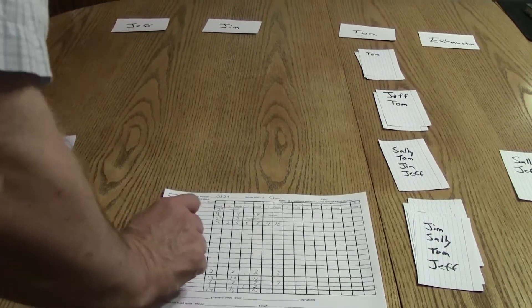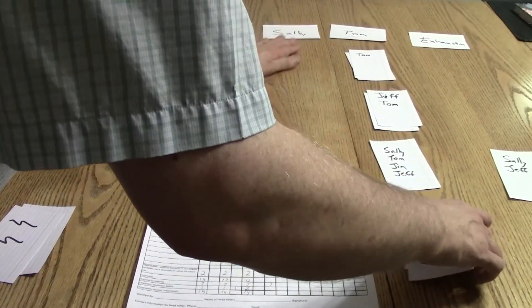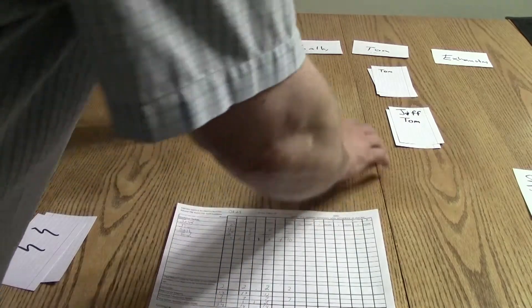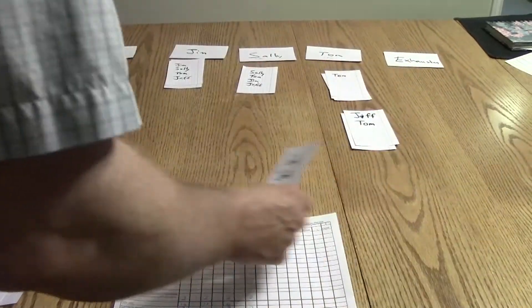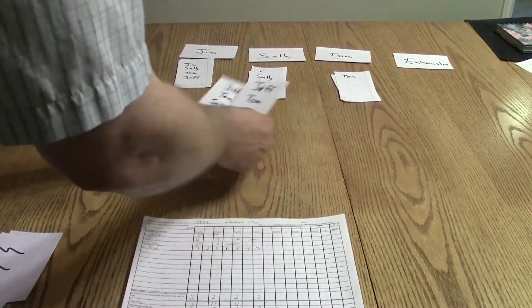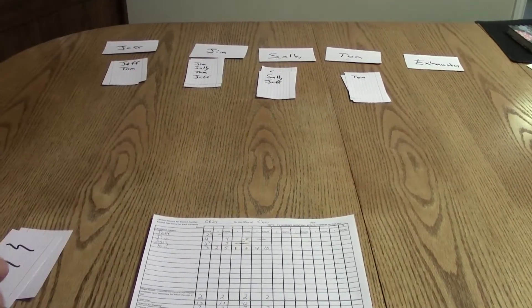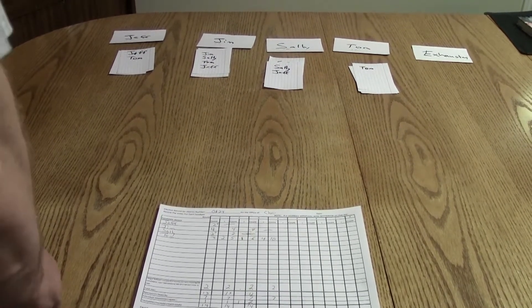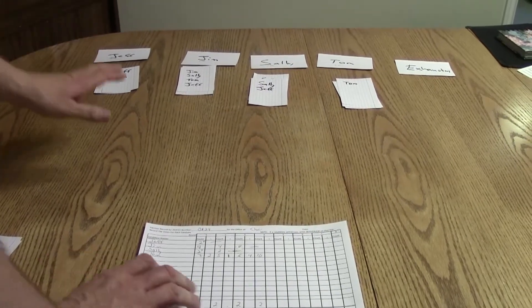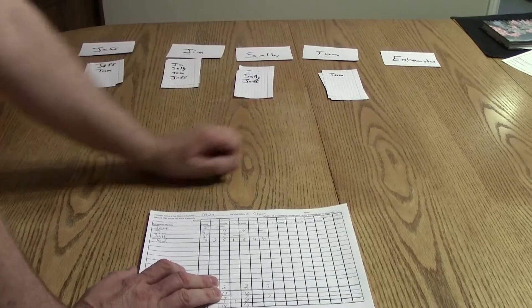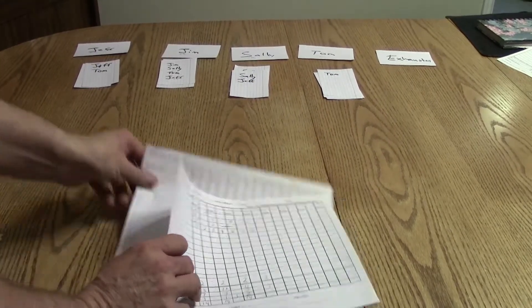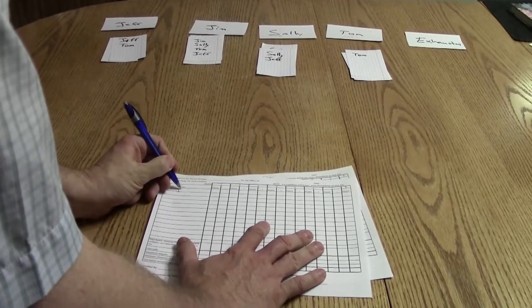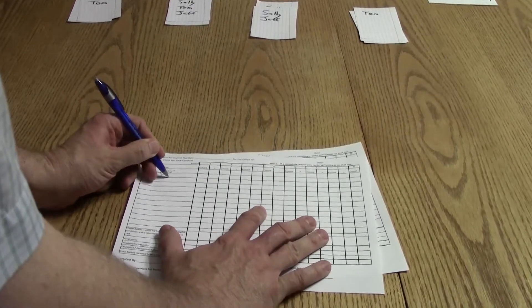So I'm going to put Jeff and Sally back up here, and I'm going to put these votes back where I got them. Because I've used this method, it's actually pretty easy to put the ballots back. So now you remember that we've elected Tom. Tom is no longer eligible for this race. I'm going to start a new sheet here with my possible candidates: Jeff, Jim, and Sally.